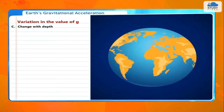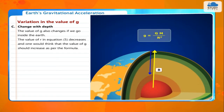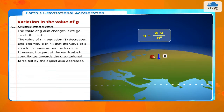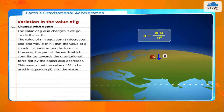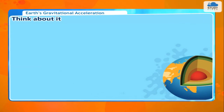Change with depth. The value of g also changes if we go inside the Earth. The value of R decreases, and one might think g should increase. However, the portion of the Earth which contributes to the gravitational force felt by the object also decreases, meaning the effective mass M also decreases. As a combined result of the change in R and M, the value of g decreases as we go deep inside the Earth.